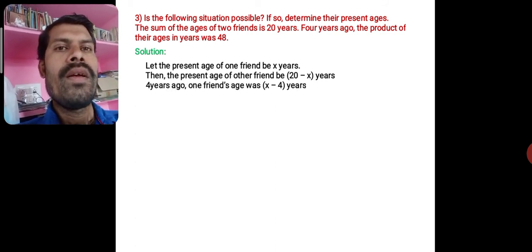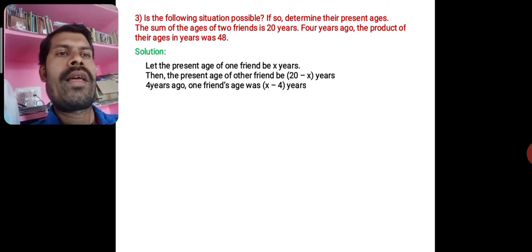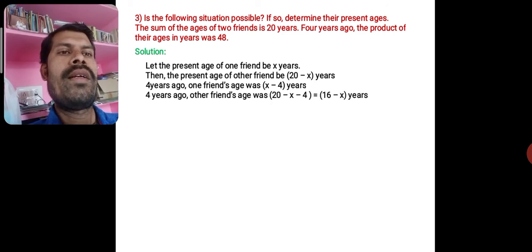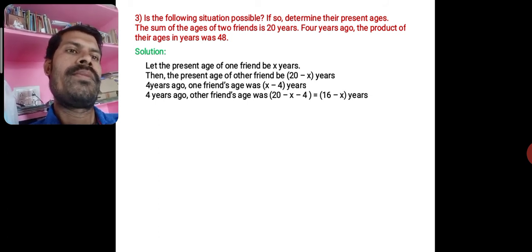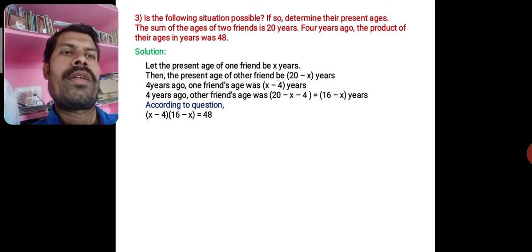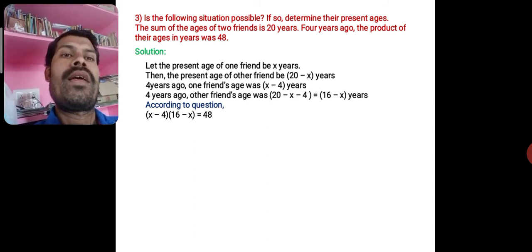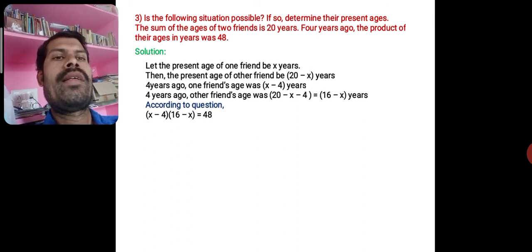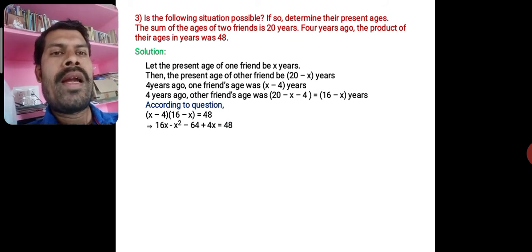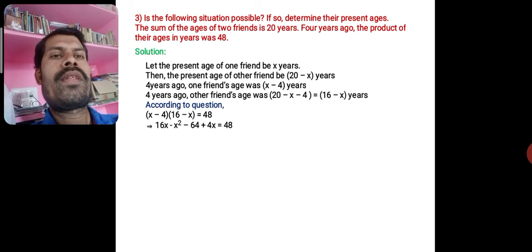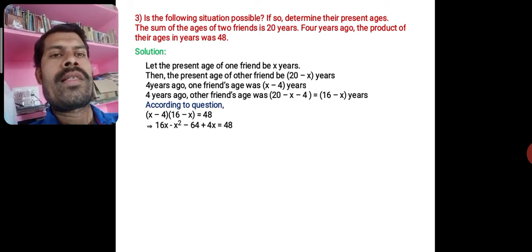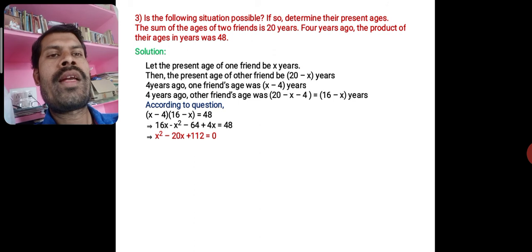Four years ago, one friend was x − 4 years and the other was 20 − x − 4 = 16 − x years. According to the question, the product of their ages was 48: (x − 4)(16 − x) = 48. Expanding: 16x − x² − 64 + 4x = 48.